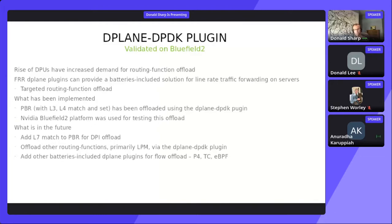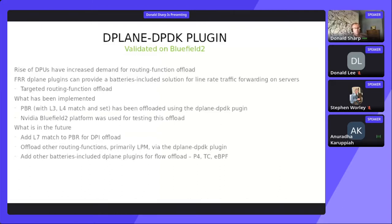The reason for picking DPDK — we could have picked anything, there are several options available for DPU offload: DPDK, TC, P4, and so on. We picked DPDK because right now it is highly deployed and widely used. It's easily accessible to everybody. We have tested this specifically on the NVIDIA Bluefield 2 platform. Bluefield 2 is a DPU solution that NVIDIA has. Any standard L3, L4 match-capable DPDK platform can be used with this plugin.